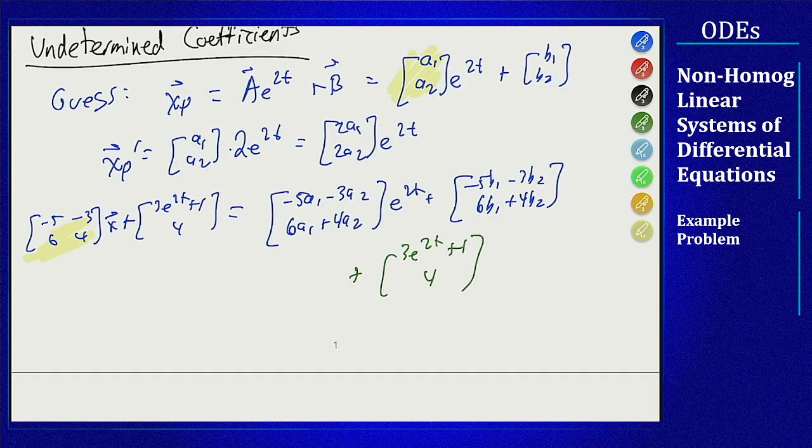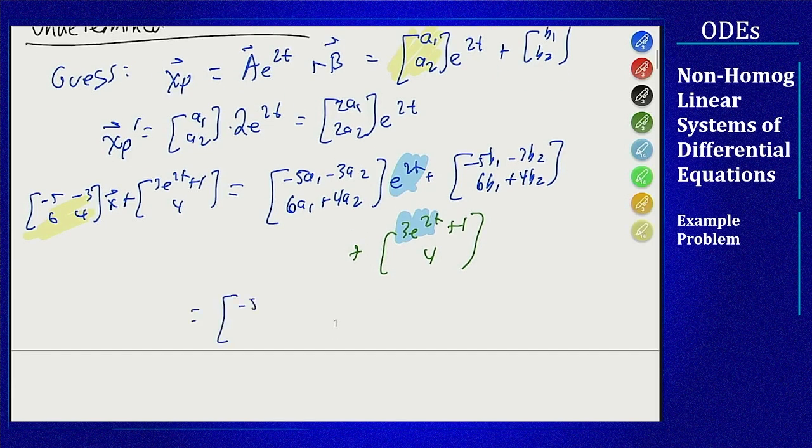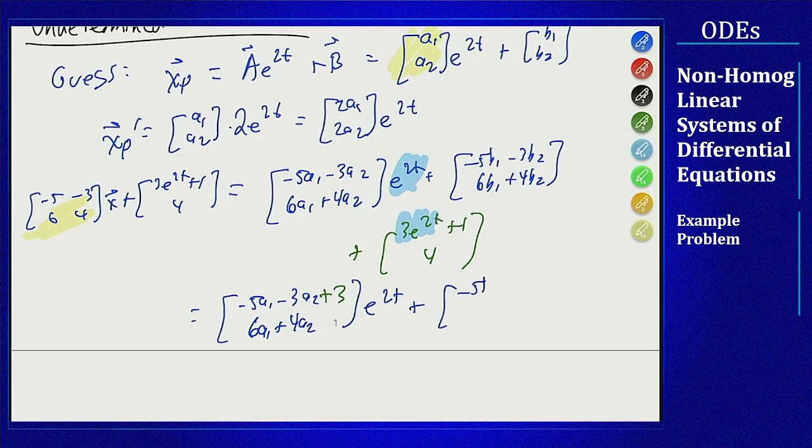Next I want to group these terms from the extra non-homogeneous part into where they fit in the rest of the problem. I can put this 3 e to the 2t in with e to the 2t up here, and the constants in with the constant term, which will give me the following expression: minus 5a1 minus 3a2 plus 3 in the top component, 6a1 plus 4a2 times e to the 2t, and then plus minus 5b1 minus 3b2 plus 1, 6b1 plus 4b2 plus 4 in the bottom.